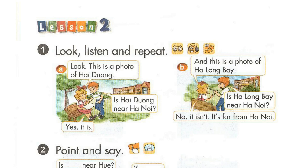Page sixty-six. Lesson two. Activity one. Look, listen and repeat. A. Look. This is a photo of Hai Fong. Is Hai Fong near Hanoi? Yes, it is. B. And this is a photo of Hai Long Bay. Is Hai Long Bay near Hanoi? No, it isn't. It's far from Hanoi.